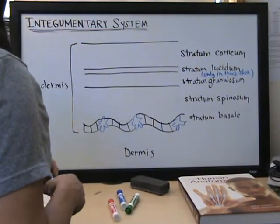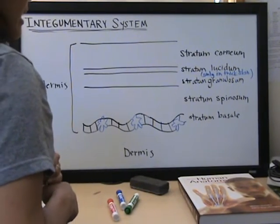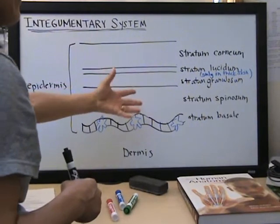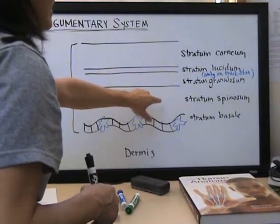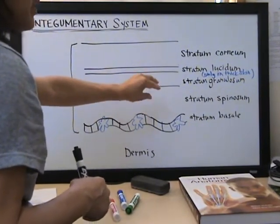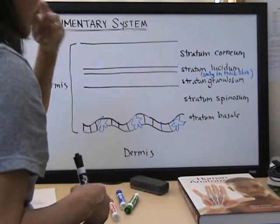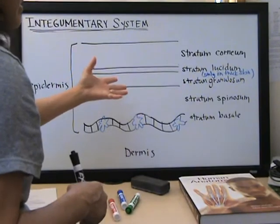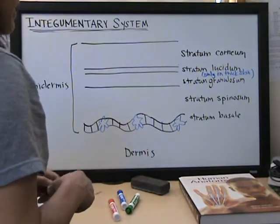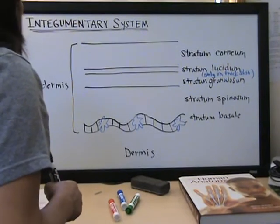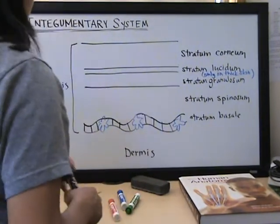The stratum spinosum, called the spiny layer, is named because during tissue preparation, these cells kind of shrink a little bit and take a spiny look to it. So you look at it and go, well, I don't see spiny cells, it's because it's only when it's prepared for viewing on a microscope, under a microscope.